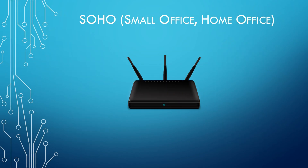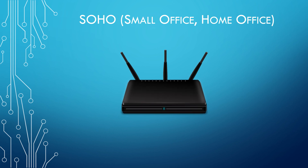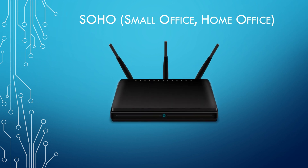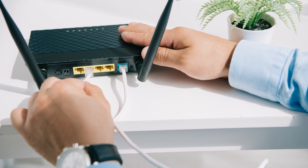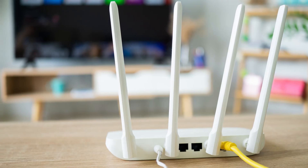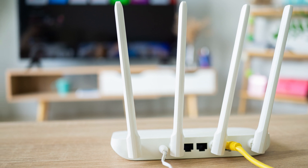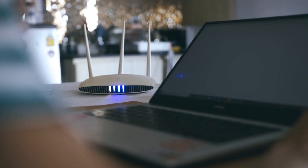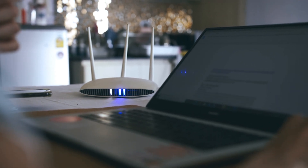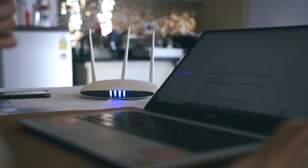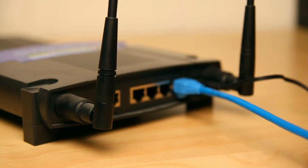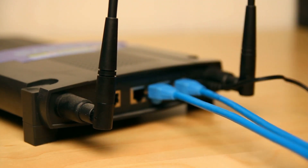In a SOHO network, a router is used to connect to the internet. You will often find that the router, switch, and access point are all integrated into one single device, like the one you can see here. This is more common in a home network as they're cheaper to buy, often a lot smaller, and require less cabling. So they take up less space, making them more convenient.